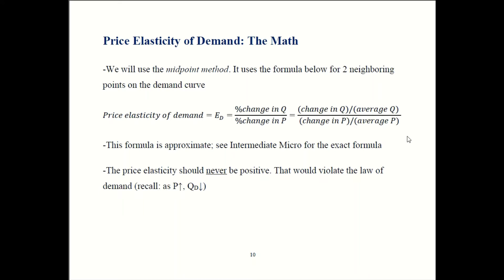We get that by looking at change in Q over average Q. That gets divided by change in P over average P. Remember Q is quantity, P is price. So to be clear, this is the average for two neighboring points on a demand curve. It's not the average of all the points in the demand curve. Just pick two. Same for price. You're averaging two neighboring prices, not all the prices.